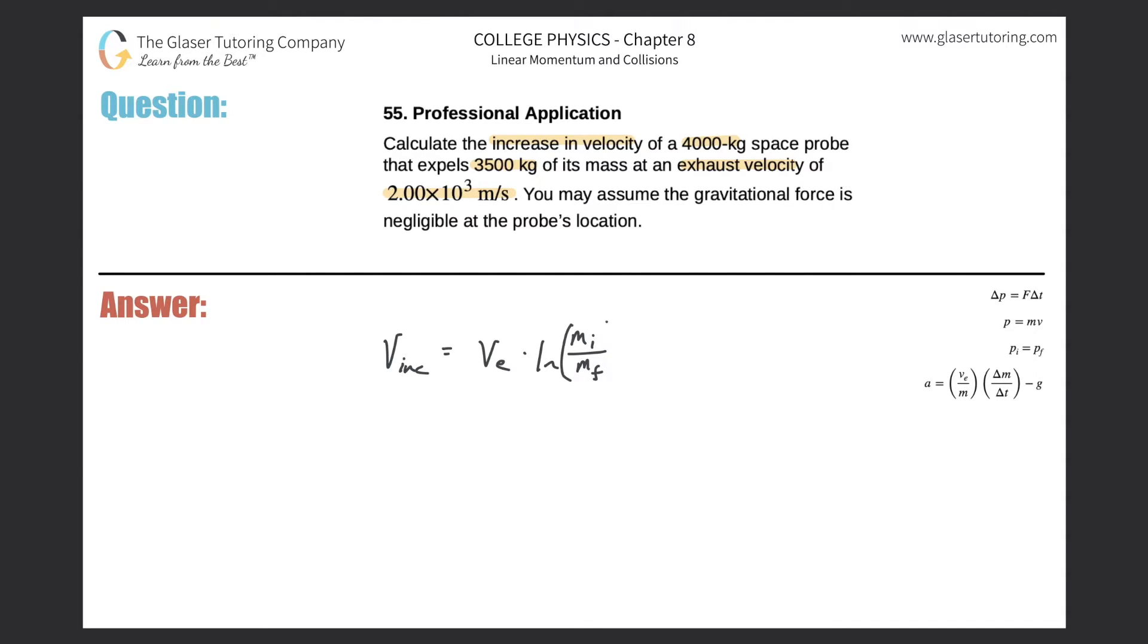Okay, so all we got to do is simply plug in the values here. So there's just one little key point. The exhaust velocity, they told us, right, 2.00 times 10 to the 3. That's then multiplied by the natural log of the initial mass of the object. And the initial mass, it said that it's a 4,000 kilogram space probe. So that's 4,000 divided by then the final mass.